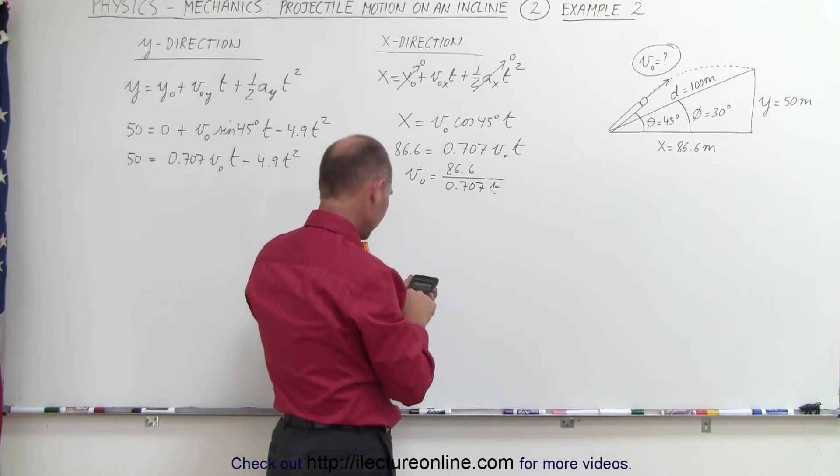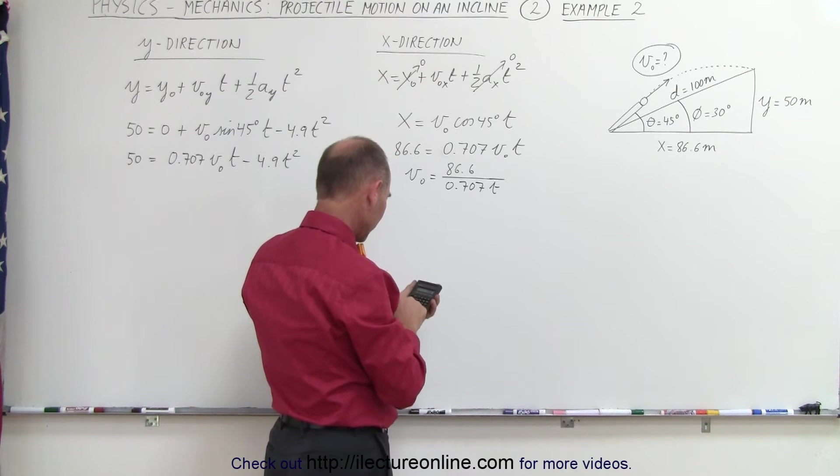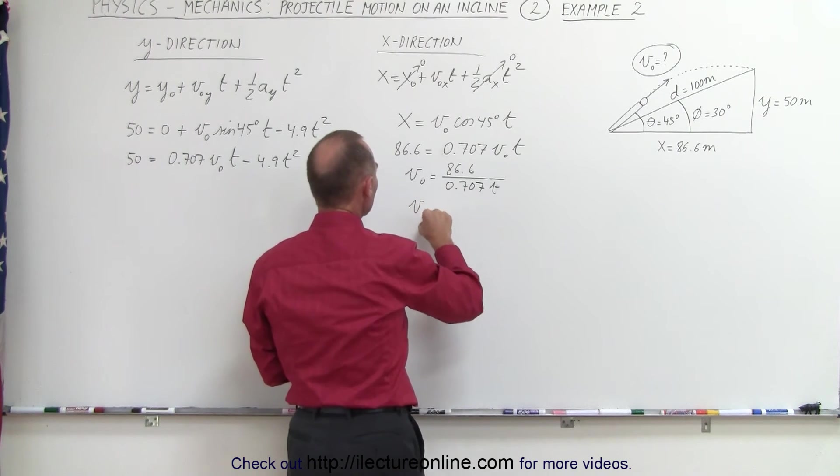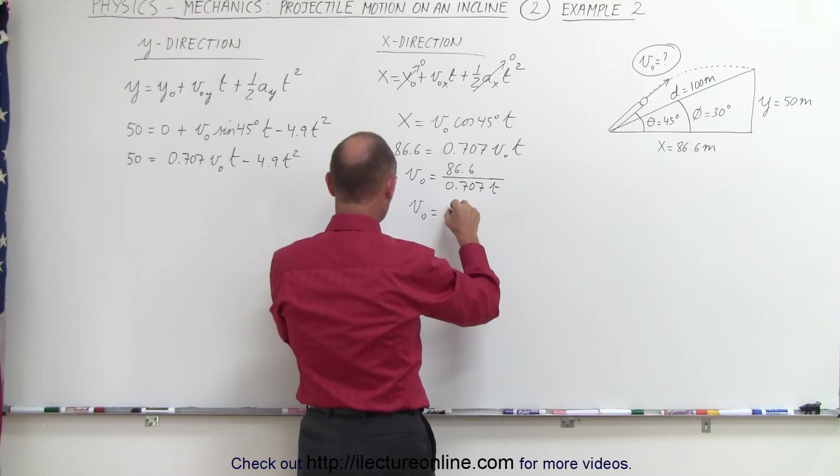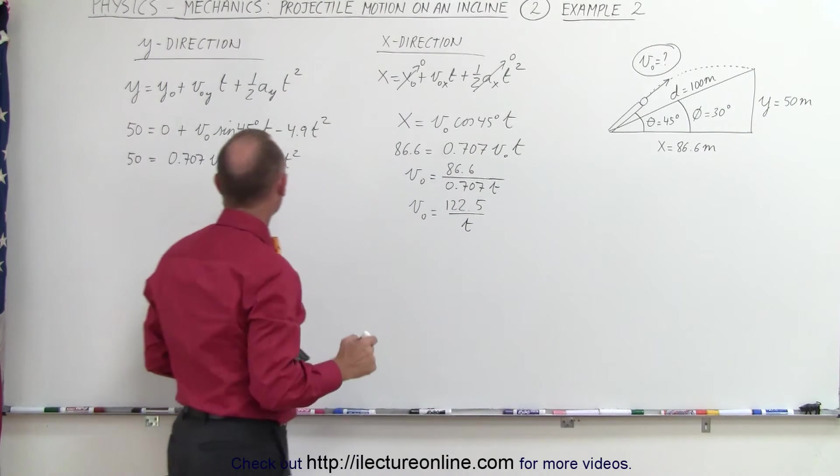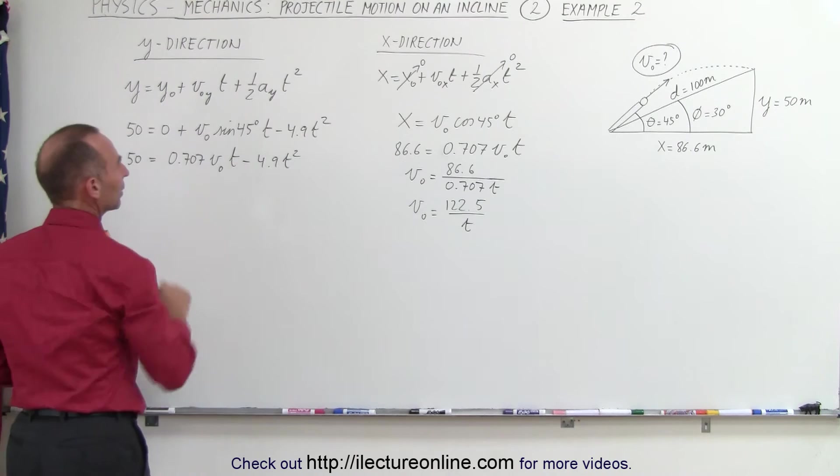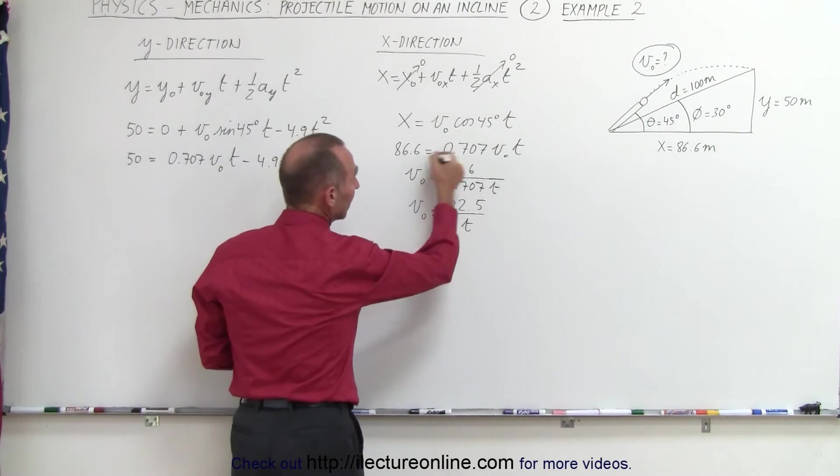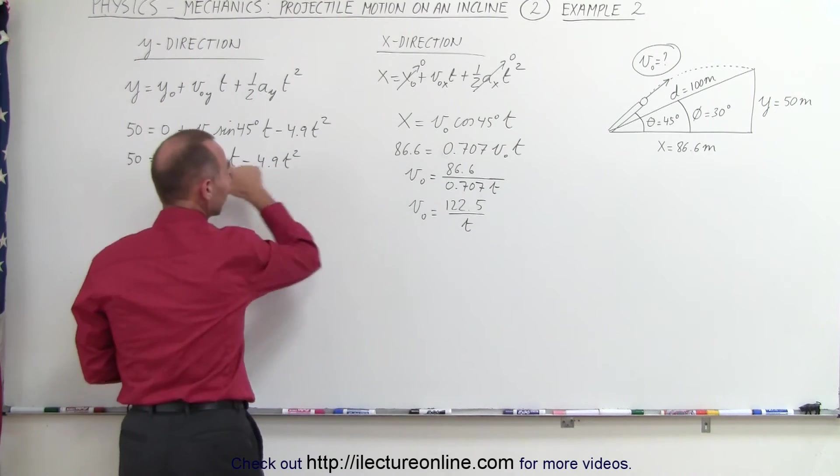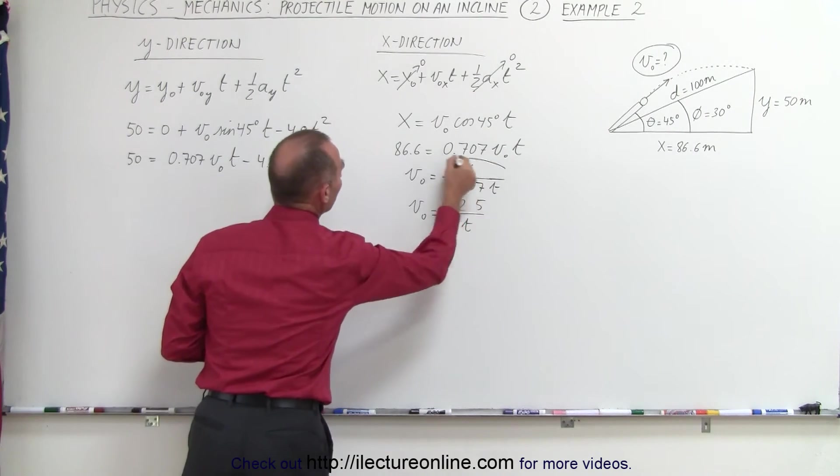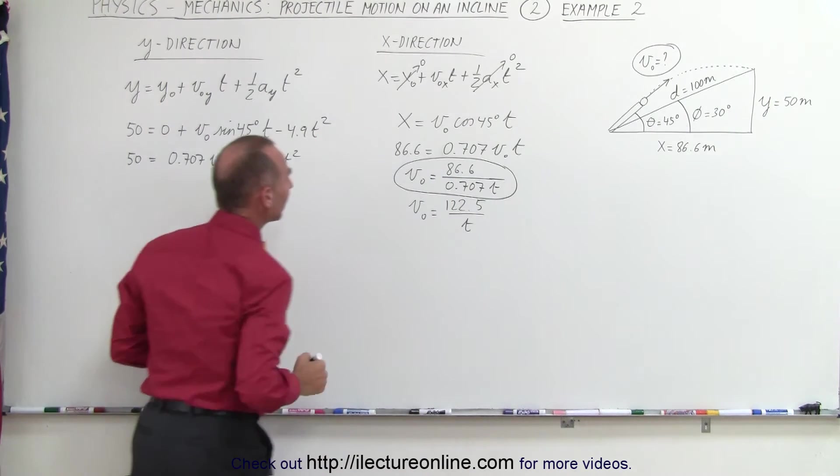That gives us v initial equals 122.5 over t. When we plug that in, we don't even need to calculate that, because if we plug it in we can see that we can cancel out the 0.707. So let's go ahead and use this form of the equation to get less rounding error.